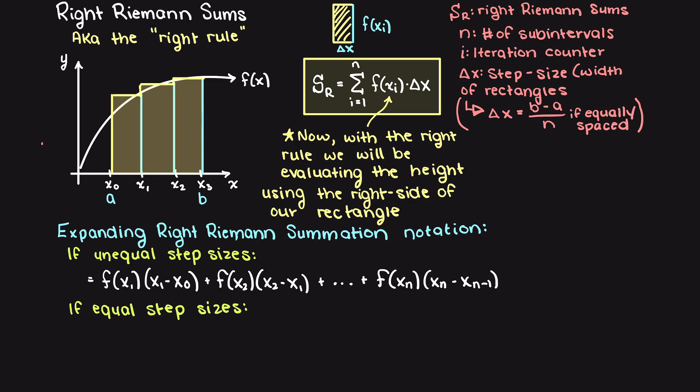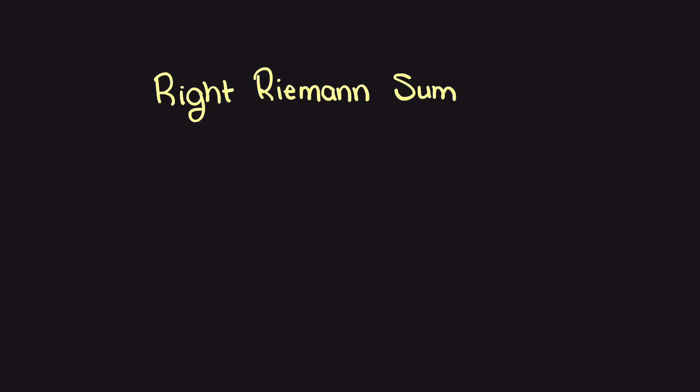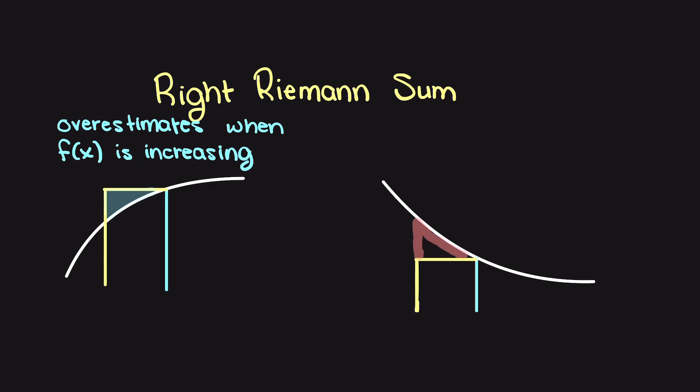If all our rectangles do share the same delta x, then we can condense this formula again by factoring out our delta x term just like we did for the left Riemann sum. One thing to note about these type of Riemann sums is that they overestimate when we have an increasing region of the function, and then they underestimate when we have a decreasing region of the function.